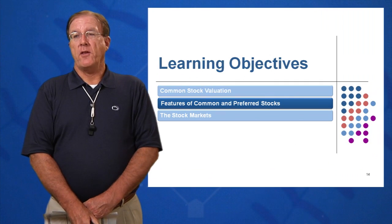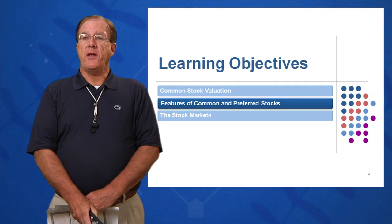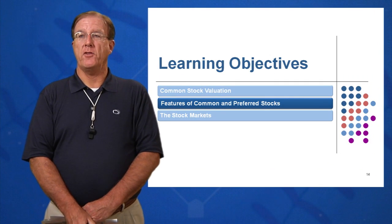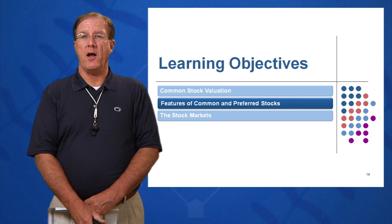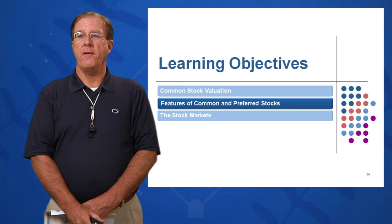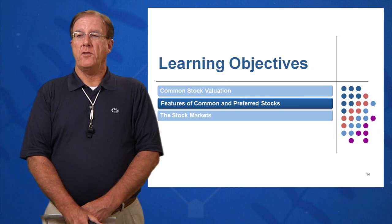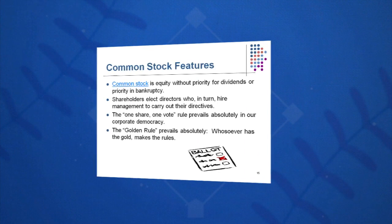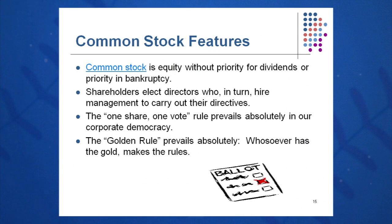Learning Objective 2 has us looking at features of common and preferred stocks. Let's take a look at some of the terminology that is useful with stocks. Common stock is equity without any priority over dividends or any priority in bankruptcy — you're just a common stockholder.